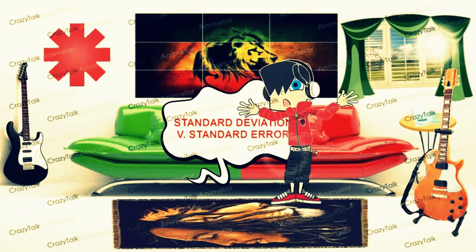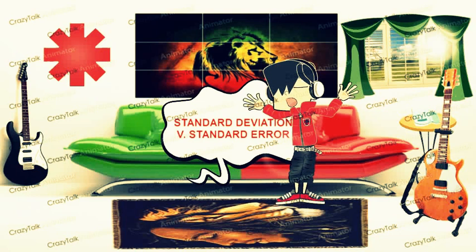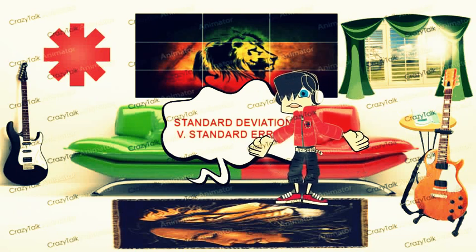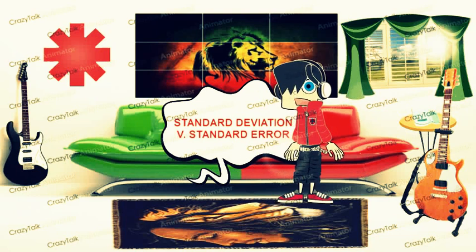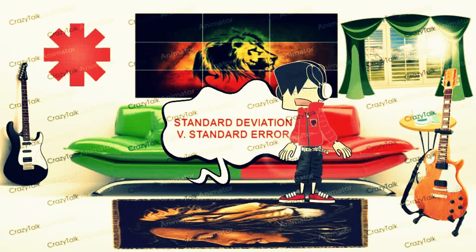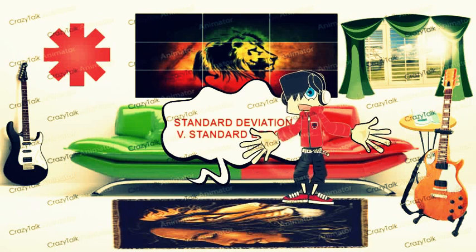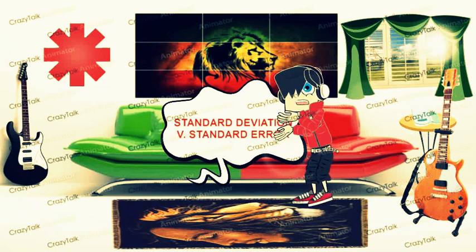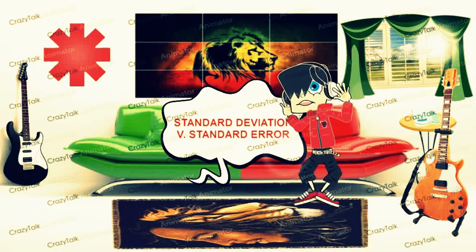The standard error depends on both the standard deviation and the sample size. Standard error is equal to the standard deviation divided by the square root of the sample size. The standard error gets smaller as the sample size increases.